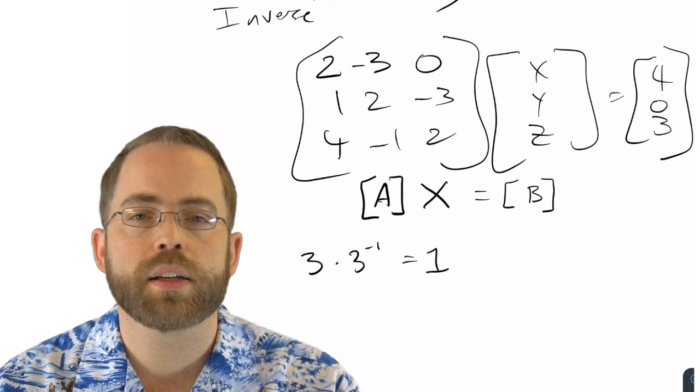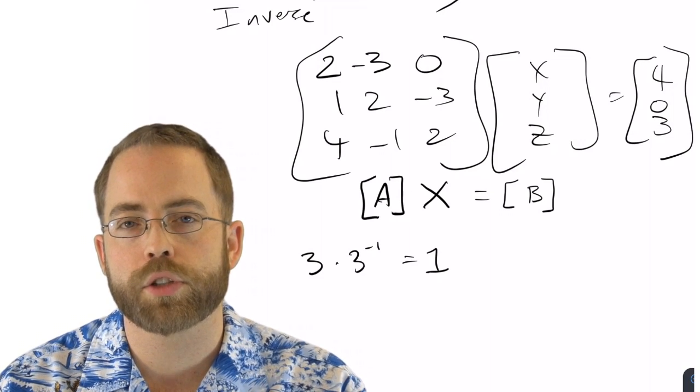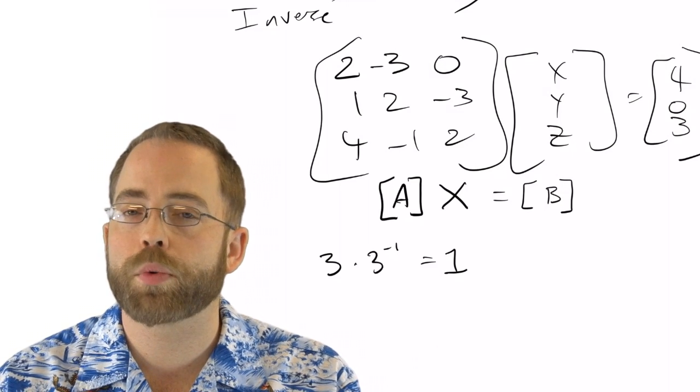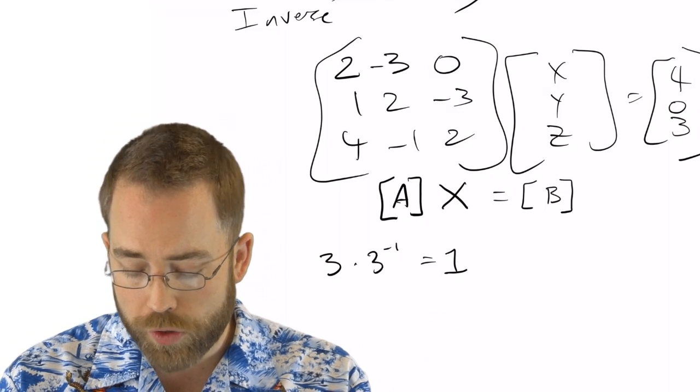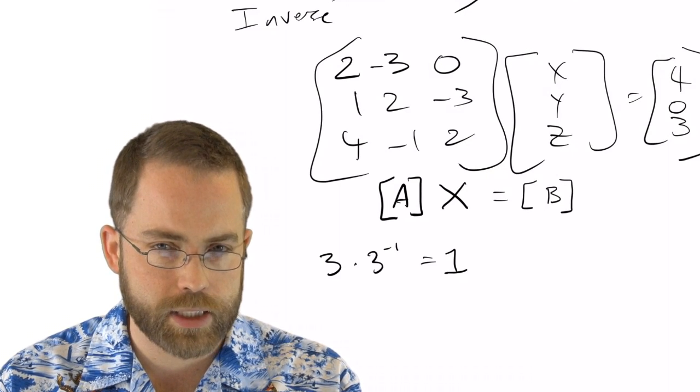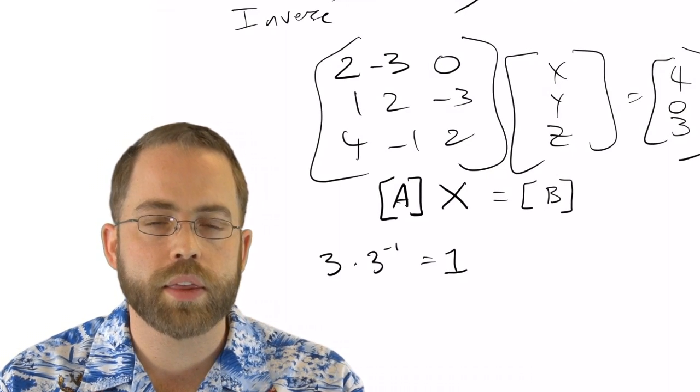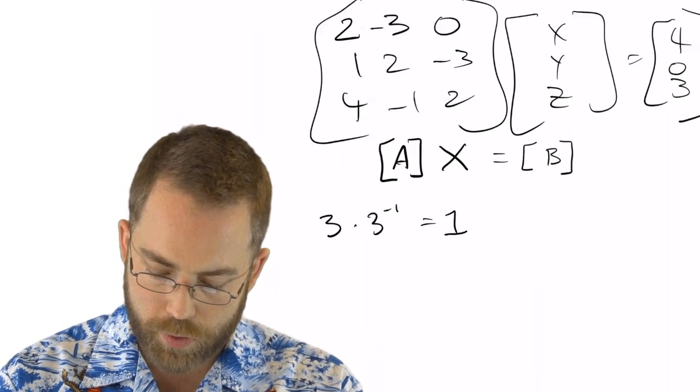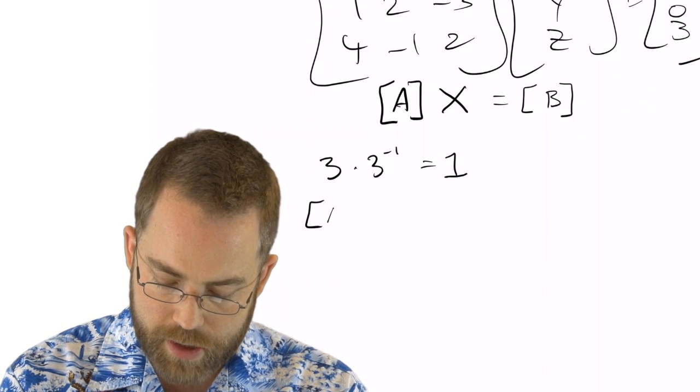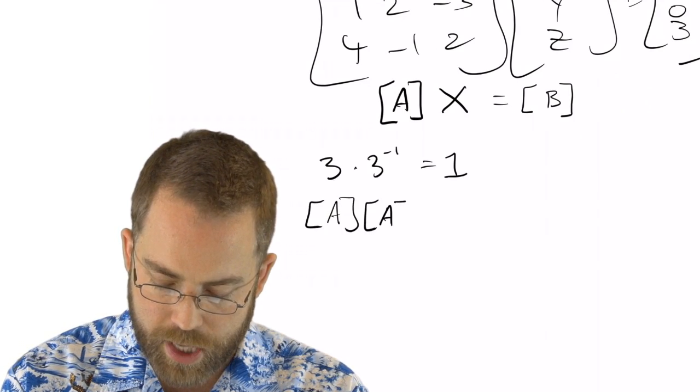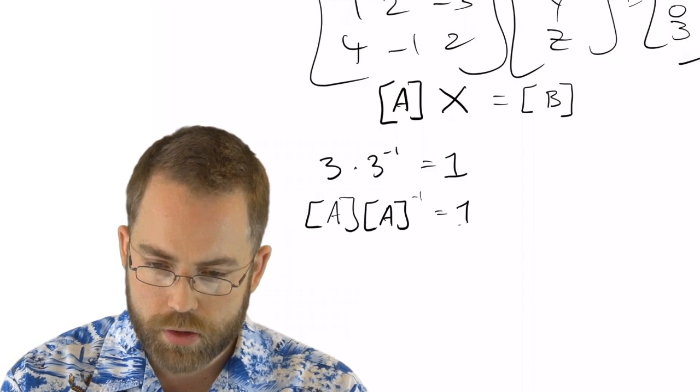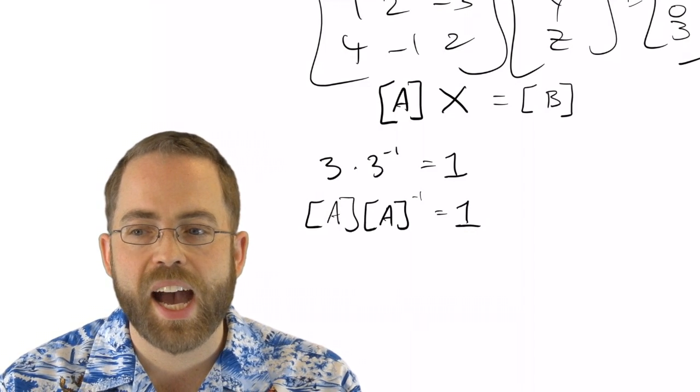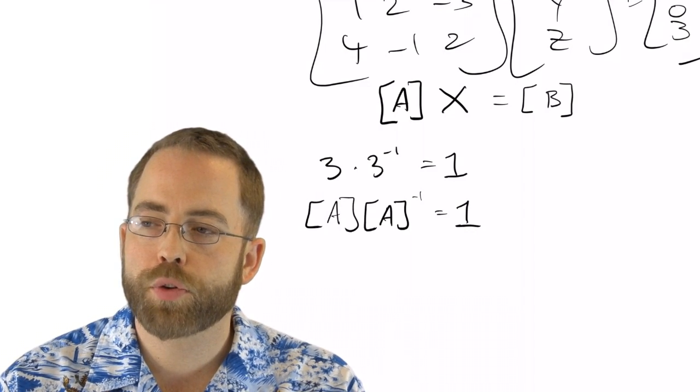So this is the trick that we need to find some sort of analogous situation for that with a matrix. We need to find some way to have the matrix that when I multiply A by this inverse of A, I get one. Well, wait a minute. What is one for a matrix? What is the identity of multiplication for matrices?